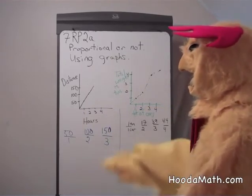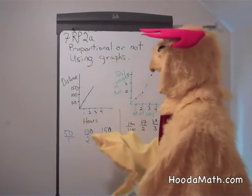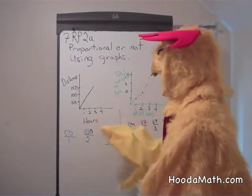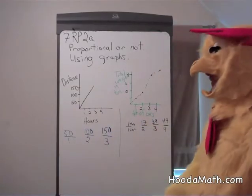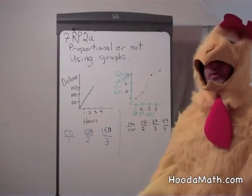If we put these down as ratios, we see that the car traveled 50 miles in one hour, 100 miles in two hours, and 150 miles in three hours. Is this relationship proportional?